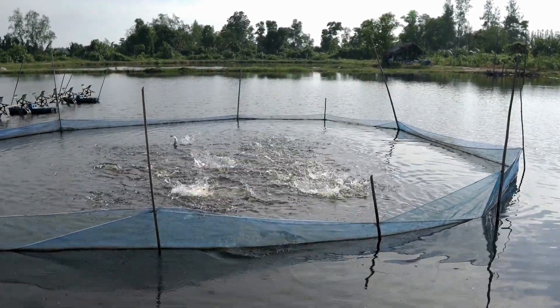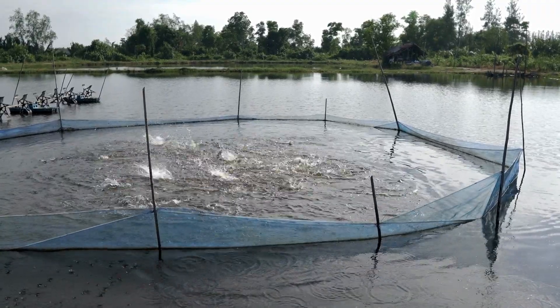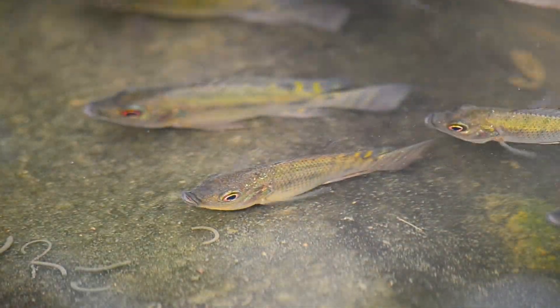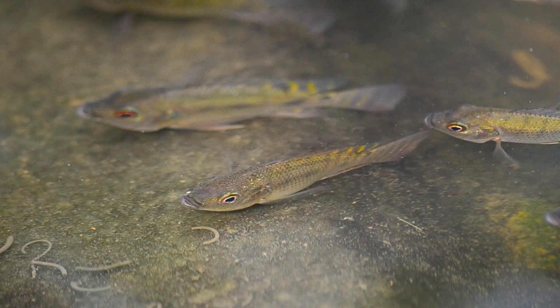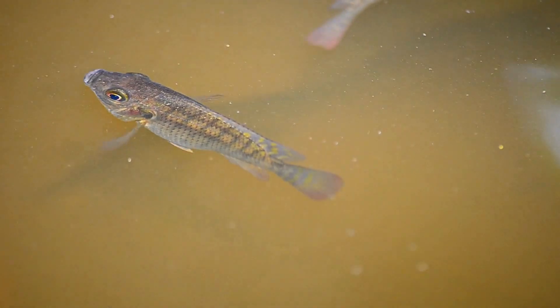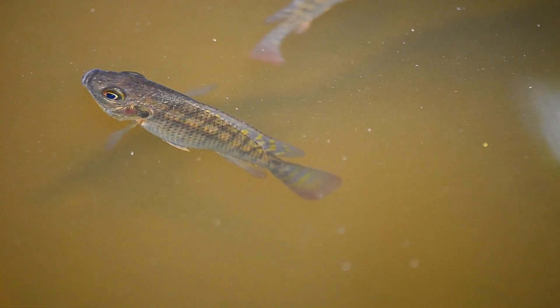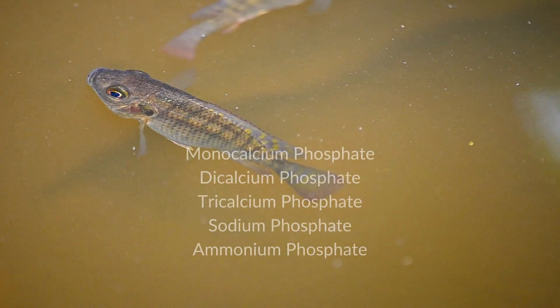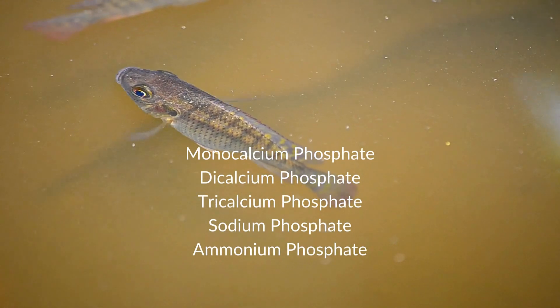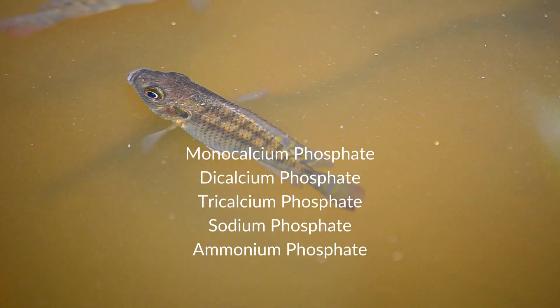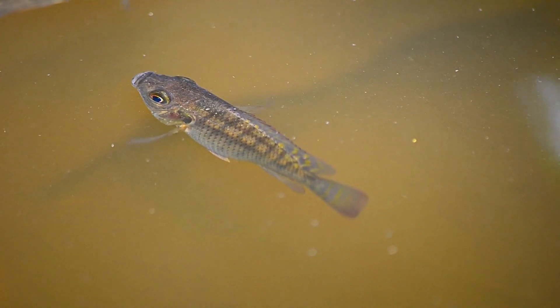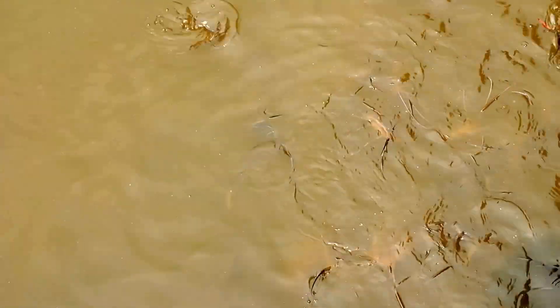Within aquaculture, the utilization of phosphorus-rich feeds plays a pivotal role in the transfer of phosphorus within ecosystems. Consequently, the management of phosphorus use in fish farming assumes paramount importance in mitigating its environmental impact. Addressing the complex challenge posed by phosphorus necessitates a comprehensive and multifaceted approach.